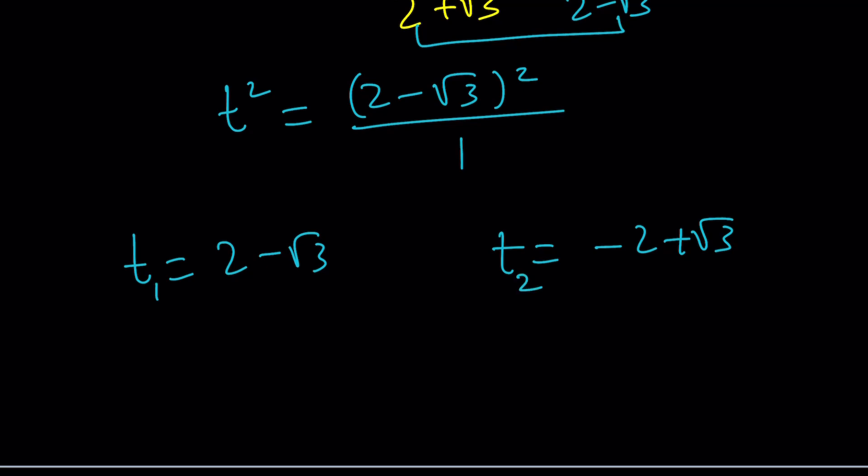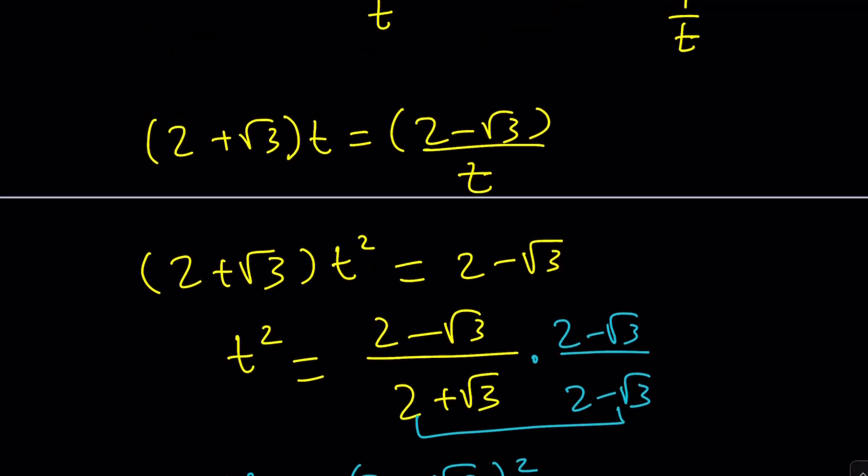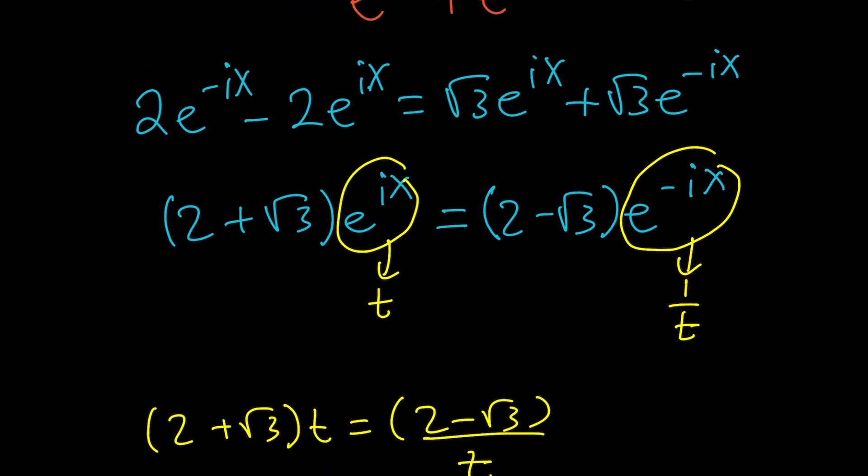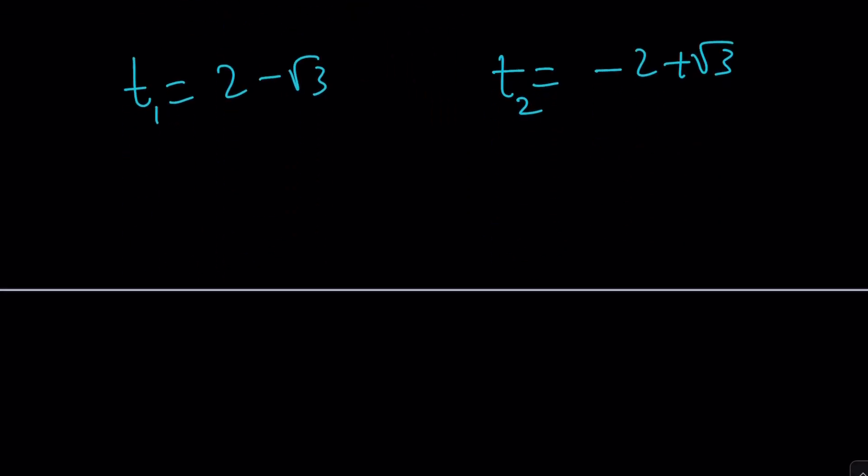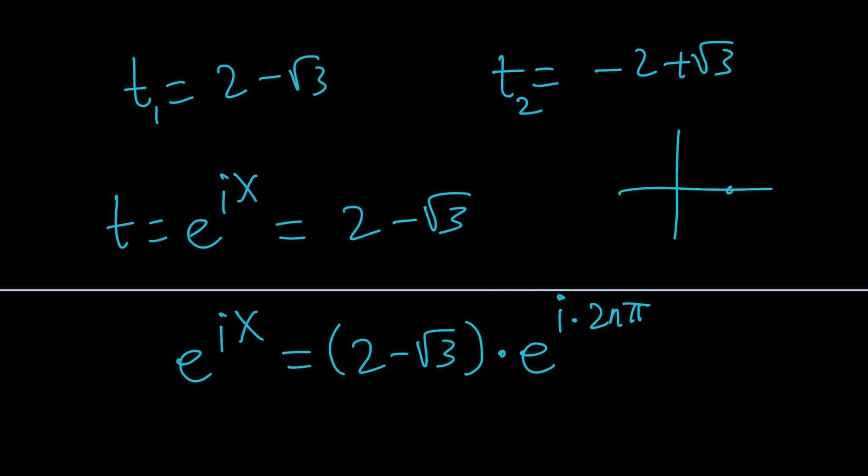Let's go ahead and go with the first solution of t and find the x value from there. t is e to the power ix, so keep a good record of whatever you use for substitution so you can back substitute. So t equals e to the power ix equals 2 minus root 3. I want to write the right-hand side as a complex number in polar form. Let's multiply this by 1, but I'm going to write the 1 as e to the power i times 2n pi.